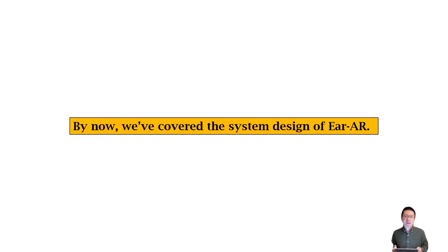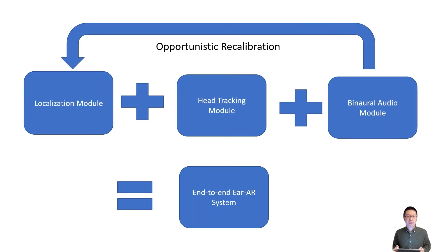By now we've covered the system design of LAR. LAR has the localization module, the head tracking module, and the binaural audio module. We also use the human's ability to perceive binaural audio as opportunistic recalibration opportunities. Upon all these modules, we build the end-to-end LAR system.